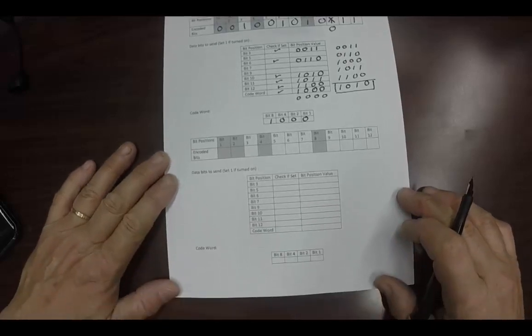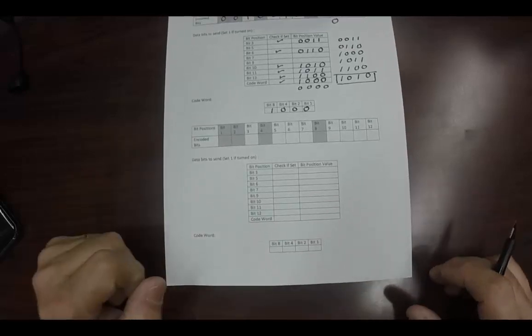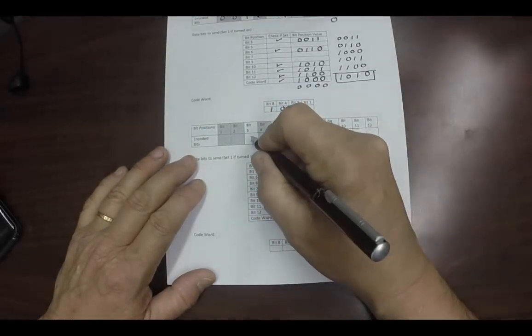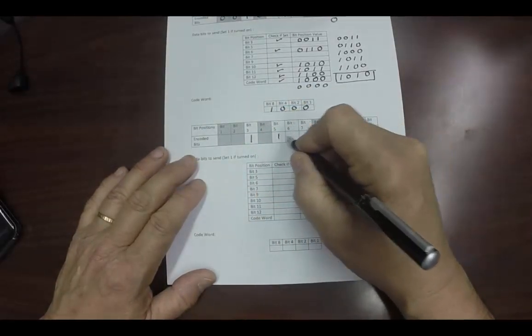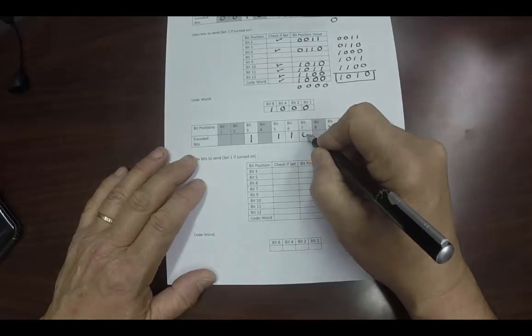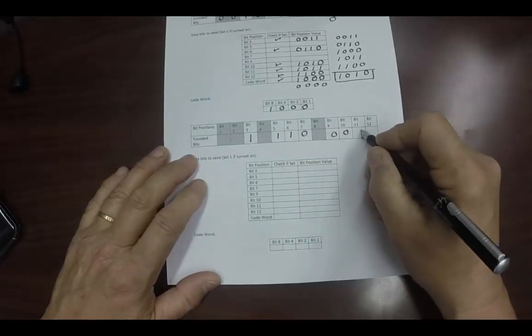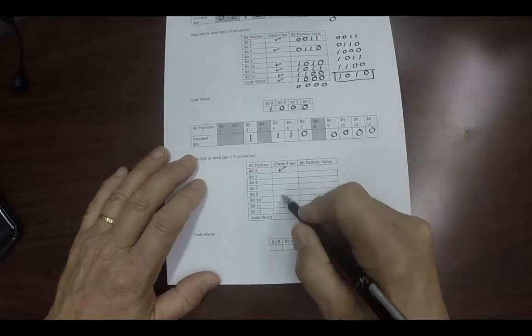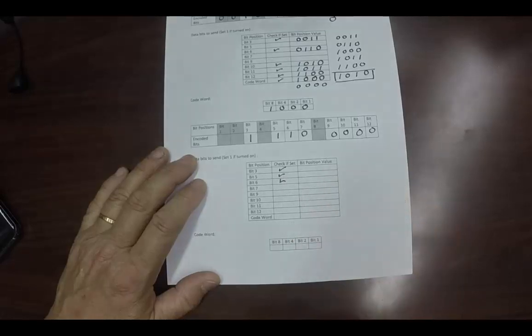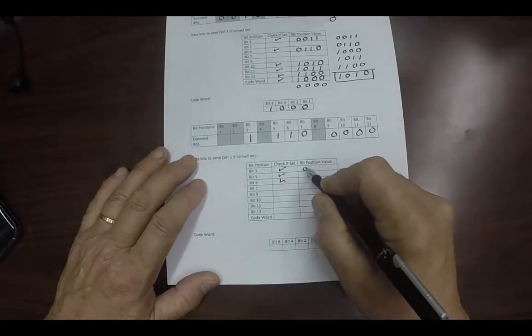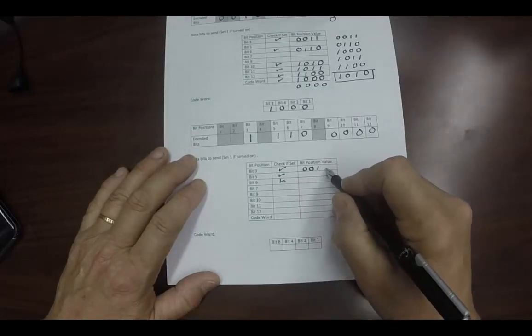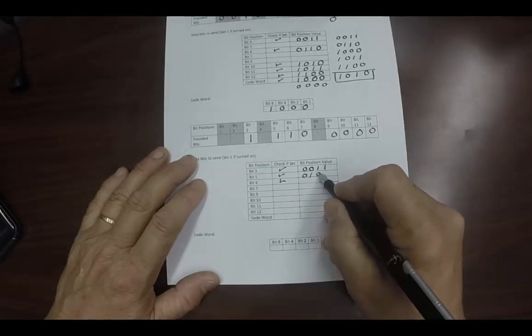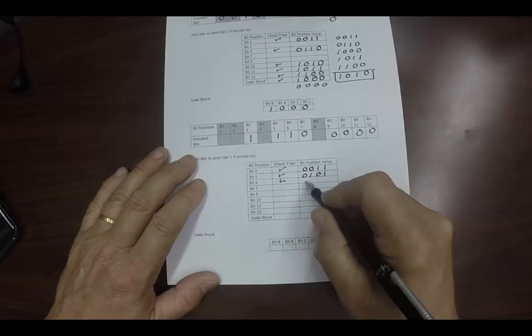Let's do one more, just for a little bit of practice. I'll put this sheet out for my students. And we will send the code word, we will send the bit 1, 1, 1, 0, and then followed by all zeros. And we go down here and we say, okay, the bit 3 is turned on, the 5 and the 6, and nothing else. So, that is 3 in binary for 4 bits. This is 5, and this is 6.